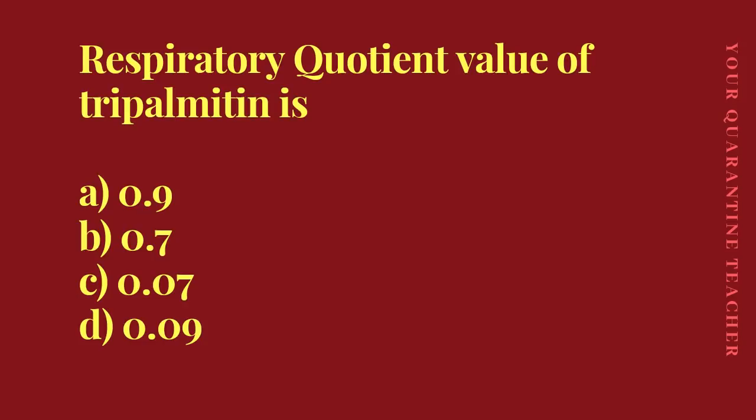Next question: respiratory quotient value of tripalmitin. Option A: 0.9, Option B: 0.7, Option C: 0.07, Option D: 0.09. The answer is Option B — 0.7.